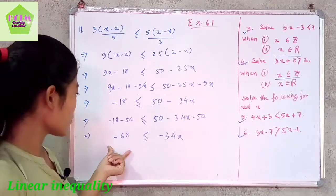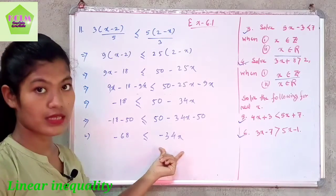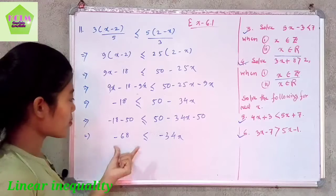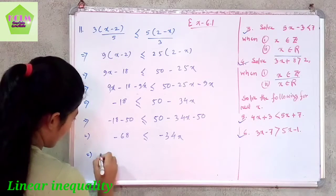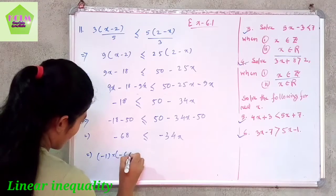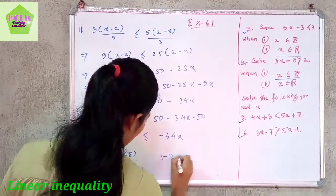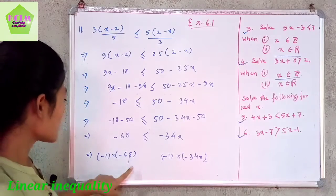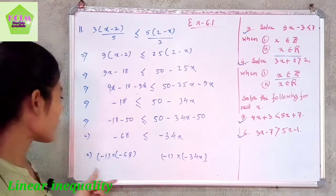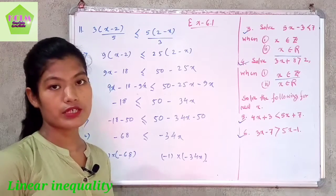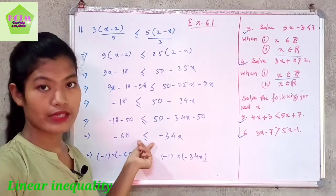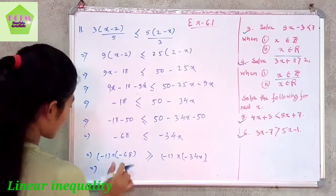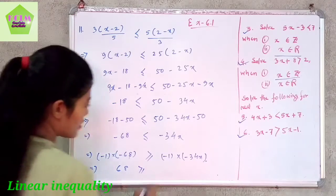Since both sides are negative, we multiply both sides by minus 1. By rule, when we multiply or divide by a negative number on a linear inequality, the sign of inequality gets reversed. So it becomes not less than or equal, but greater than or equal. Therefore positive 68 greater than or equal to 34x.